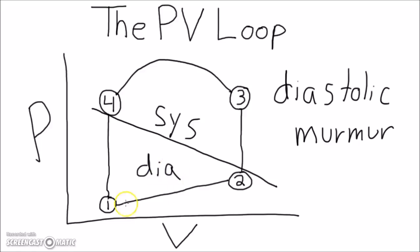Now, if there is a diastolic murmur, we have just eliminated two possible answers, leaving us with one or two.